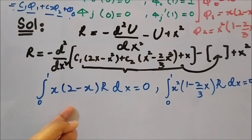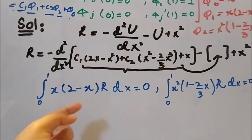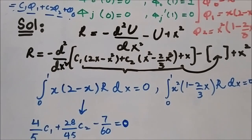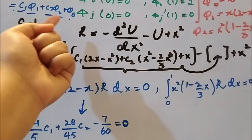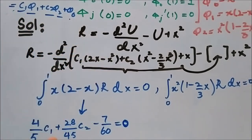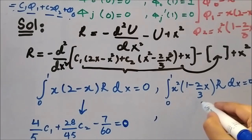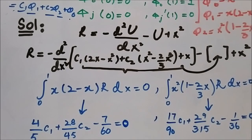Here I will write the solutions of these two integrals for you to verify against your own answer. The solution of the first integral is: (4/5)c1 + (28/45)c2 − 7/60 = 0. c1 and c2 are the two main constants we need to find in order to write the approximate u, since we have phi1, phi2, and phi0 but not yet c1 and c2. The solution of the second integral is: (17/90)c1 + (29/315)c2 − 1/36 = 0.